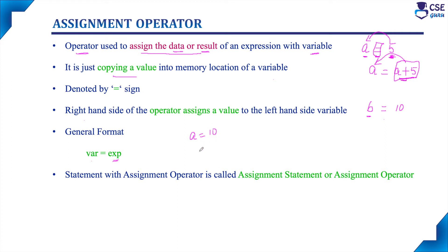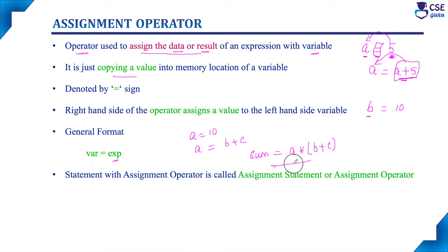For example: a = 10, a = b + c, or sum = a * b + c. Any expression can be given on the right-hand side. The right-hand side expression will be evaluated and its result will be assigned to the left-hand side variable. A statement with an assignment operator is called an assignment statement.